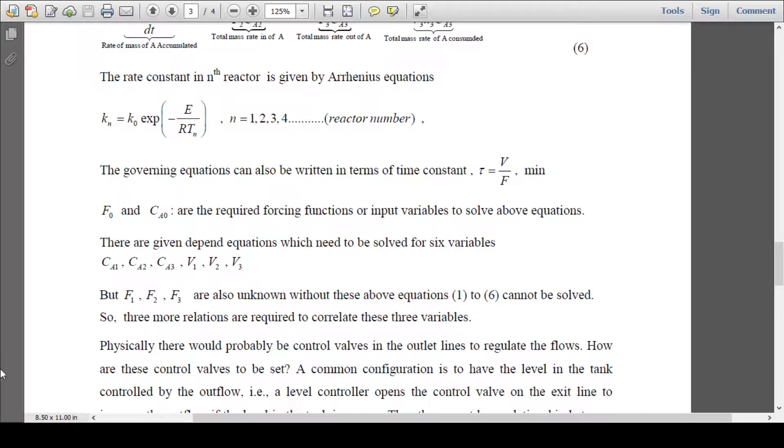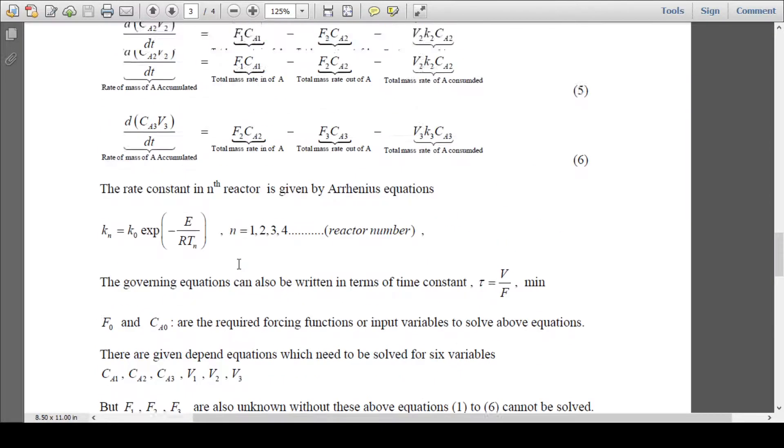F0 and Ca0 are the initial conditions which we need to solve these equations. There are six equations, and these are the six variables we have: Ca1, Ca2, Ca3, V1, V2, V3.